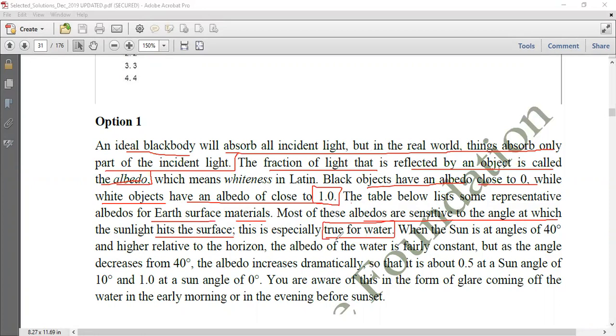Because with respect to angle, it is quite sensitive. When the sun is at angle of 40 degree and higher related to the horizon, the albedo of the water is fairly constant. But as the angle decreased from 40 degree, the albedo increased dramatically.